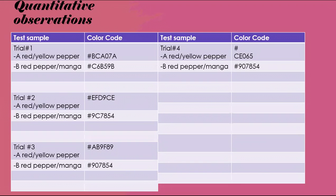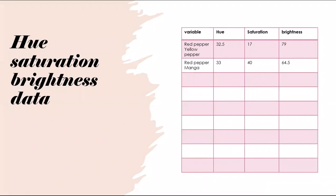Hue, saturation, and brightness are variables in colors. As you can see, they're practically all the same. Hue is the same. Saturation for red pepper and yellow pepper was lower than red pepper and mango. Brightness was almost the same.